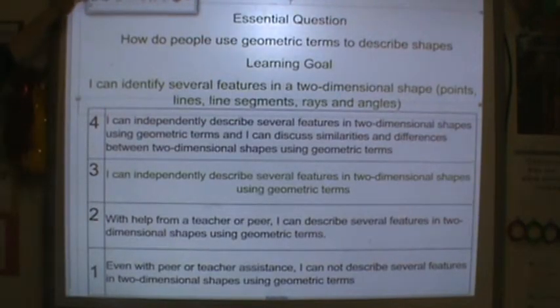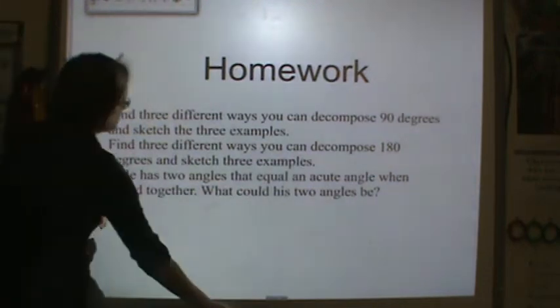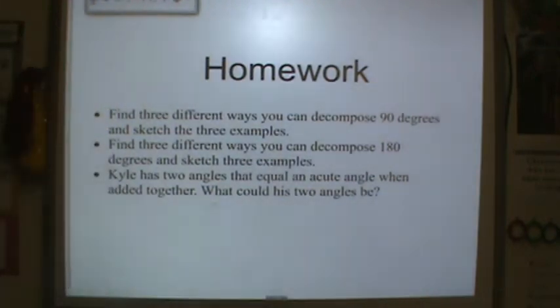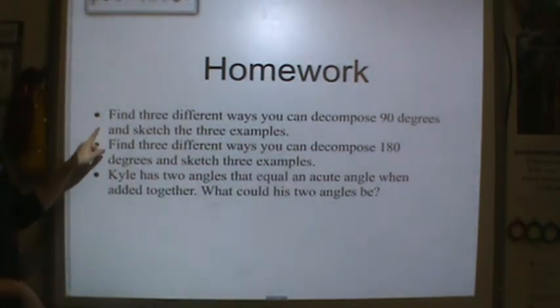Look at your homework. So what I would like you to do is I want you to find three different ways you can decompose 90 degrees. So what are three different ways you can break up 90 degrees? I want you to sketch these three examples. Find three different ways you can decompose 180 degrees, and I want to see those. And last question: Kyle has two angles that equal an acute angle when added together. What could his angles be?